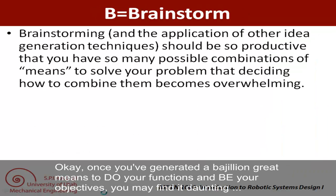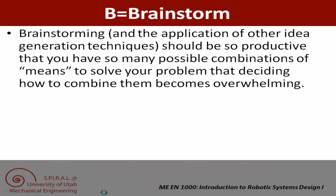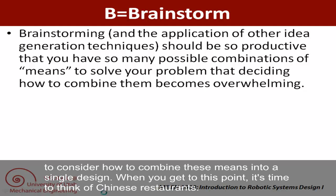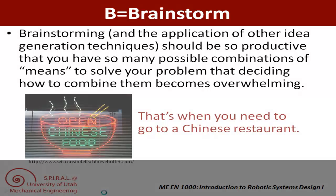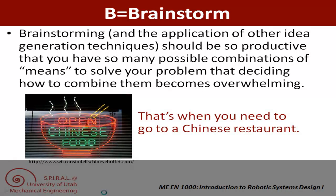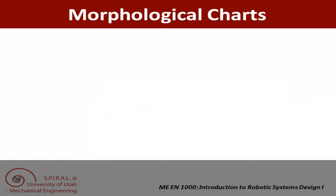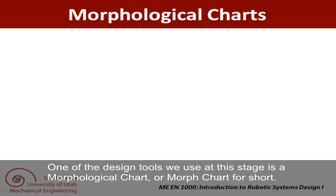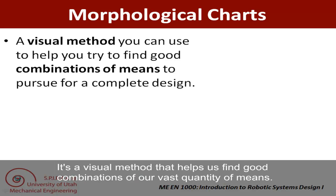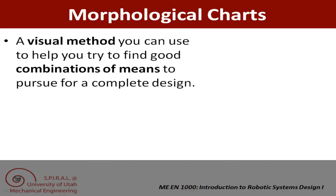Once you've generated a huge number of great means to do your functions and meet your objectives, you may find it daunting to consider how to combine these means into a single design. When you get to this point, it's time to think of Chinese restaurants — we'll get back to what that means in just a minute. One of the design tools we use at this stage is a morphological chart, or morph chart for short. It's a visual method that helps us find good combinations of our vast quantity of means that we've generated from brainstorming.